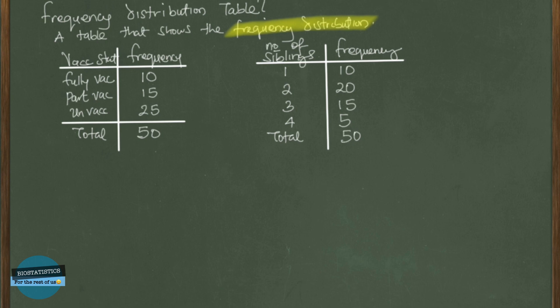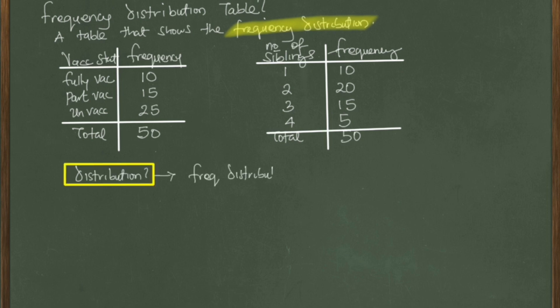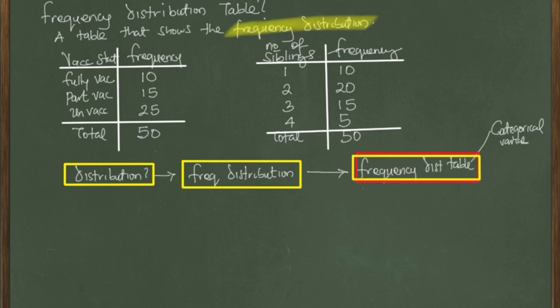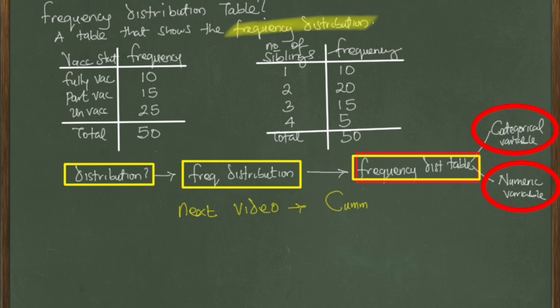Here we have two frequency distributions: one for a categorical variable, which is vaccination status, and another for a numeric variable, which is the number of siblings. In this video, we talked about what a distribution is, what a frequency distribution is, and what a frequency distribution table is — the table used to represent the frequency distribution — which can be done with both categorical and numeric variables. In our next video, we'll be talking about cumulative frequencies. See you in the next video.